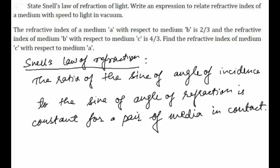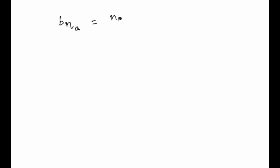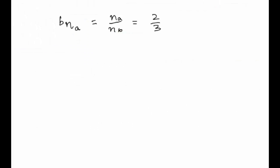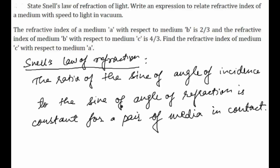The refractive index of medium A with respect to medium B is 2/3, so NA by NB equals 2/3. It is also given that the refractive index of medium B with respect to medium C is 4/3, that means NB by NC equals 4/3.